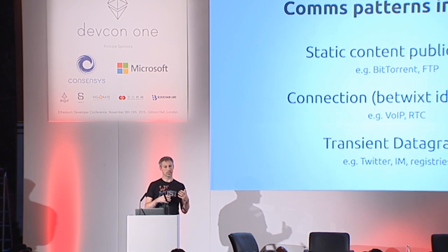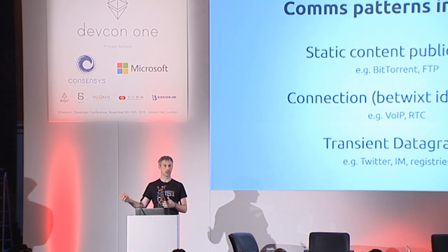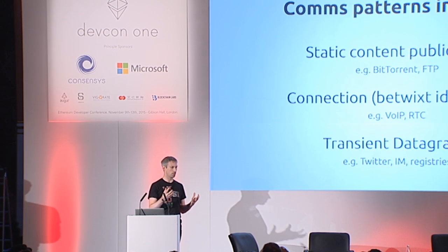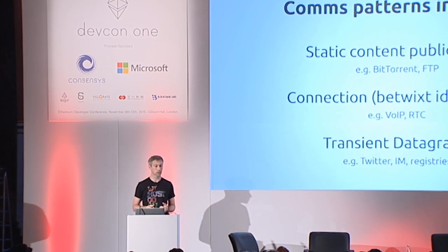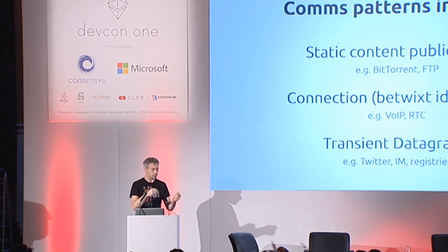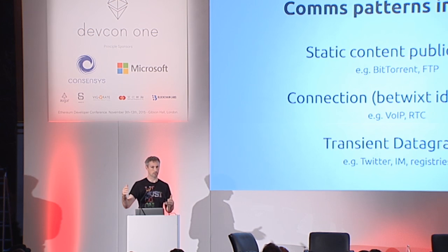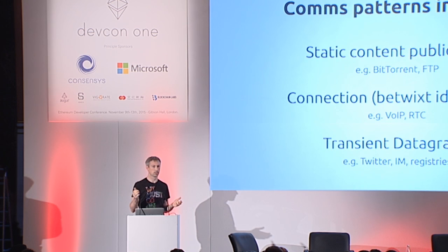The final one is much more interesting: transient datagrams. This is the kind of communication where we want to generally tell a group of people something for some limited period of time. This is something we don't really have a proper abstraction for yet, but you see it every day. You see it when you use an exchange — you want to communicate to a bunch of people, at least those on the exchange interested in a particular currency, and you want that message to run out after a period of time.